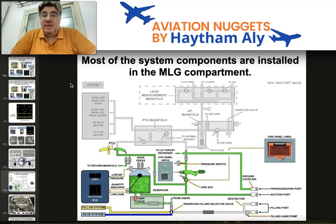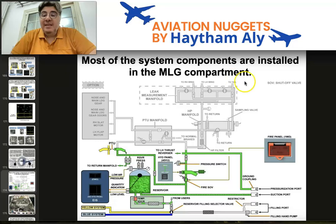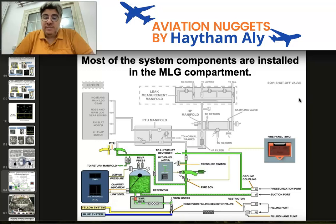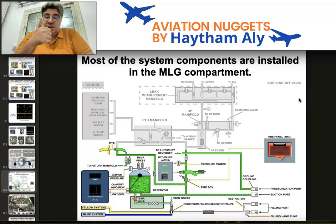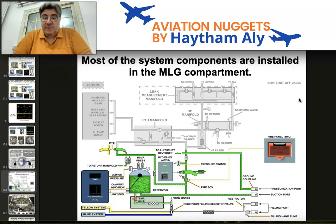Let's go deeply inside the green hydraulic system. Most of the system components are installed in the main landing gear compartment, the main wheel well. The main modules of the green hydraulic system include the high pressure manifold, leak measurement manifold, BTU manifold, and return manifold.